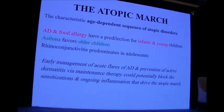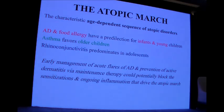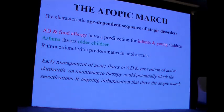The characteristic age-dependent sequence of atopic disorders is called the atopic march, in which atopic dermatitis and food allergy occur early in infants and young children, while asthma favors older children and rhinoconjunctivitis affects adolescents. It is very important that we manage early the acute flares of atopic dermatitis and prevent active dermatitis by continuous maintenance therapy.